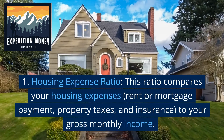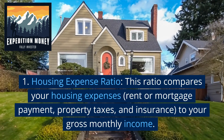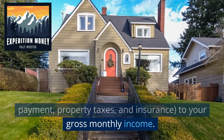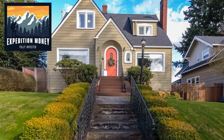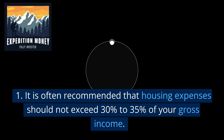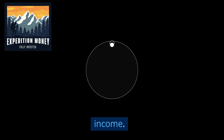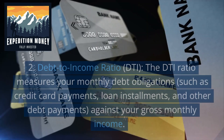Housing Expense Ratio. This ratio compares your housing expenses to your gross monthly income. It is often recommended that housing expenses should not exceed 30% to 35% of your gross income.